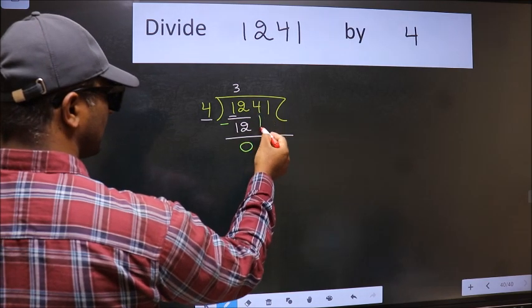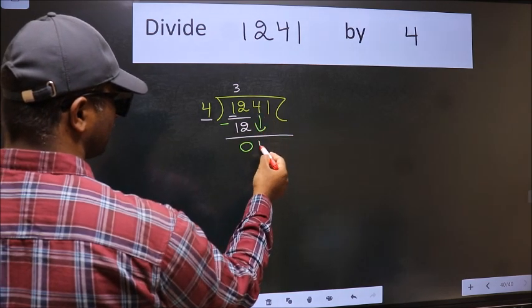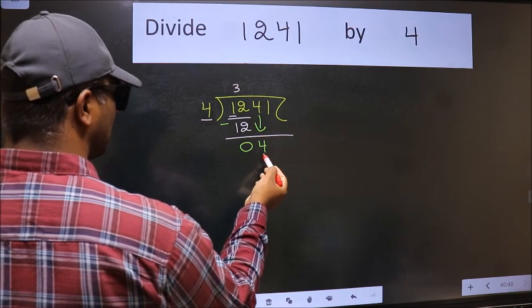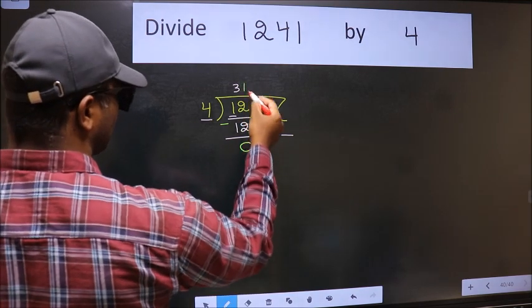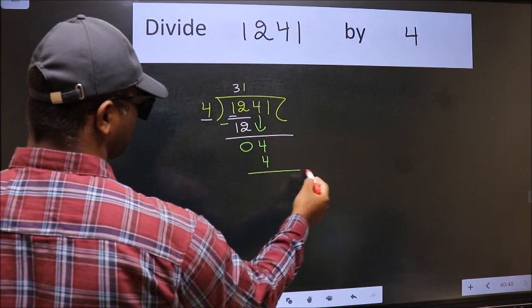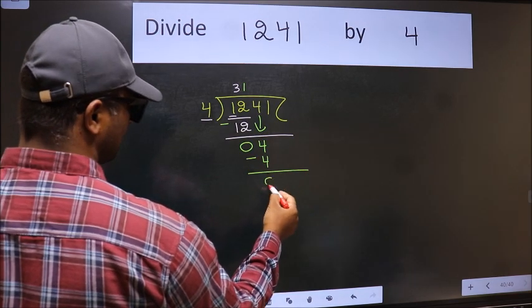After this, bring down the beside number. So, 4 down. When do we get 4 in the 4 table? 4 once is 4. Now we should subtract. We get 0.